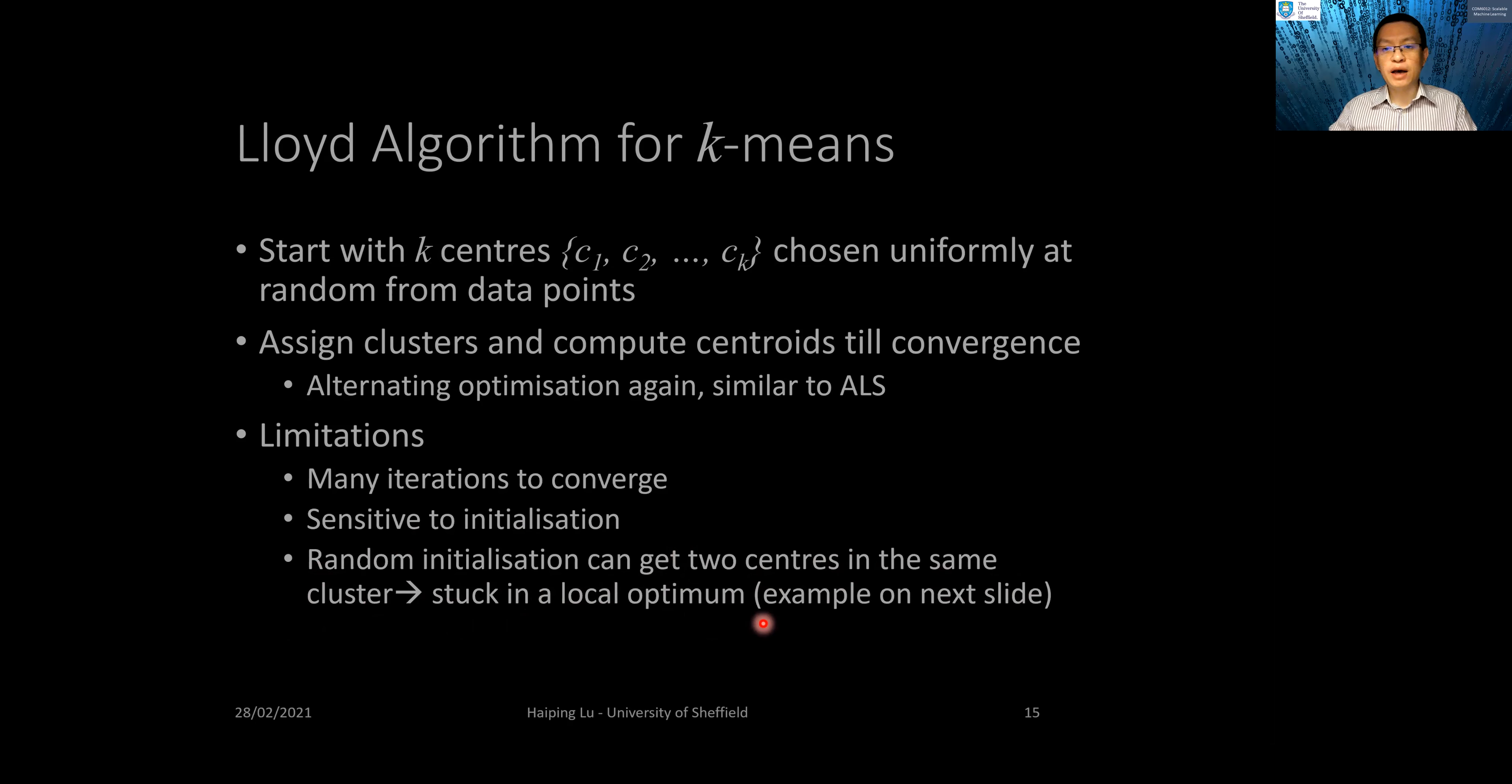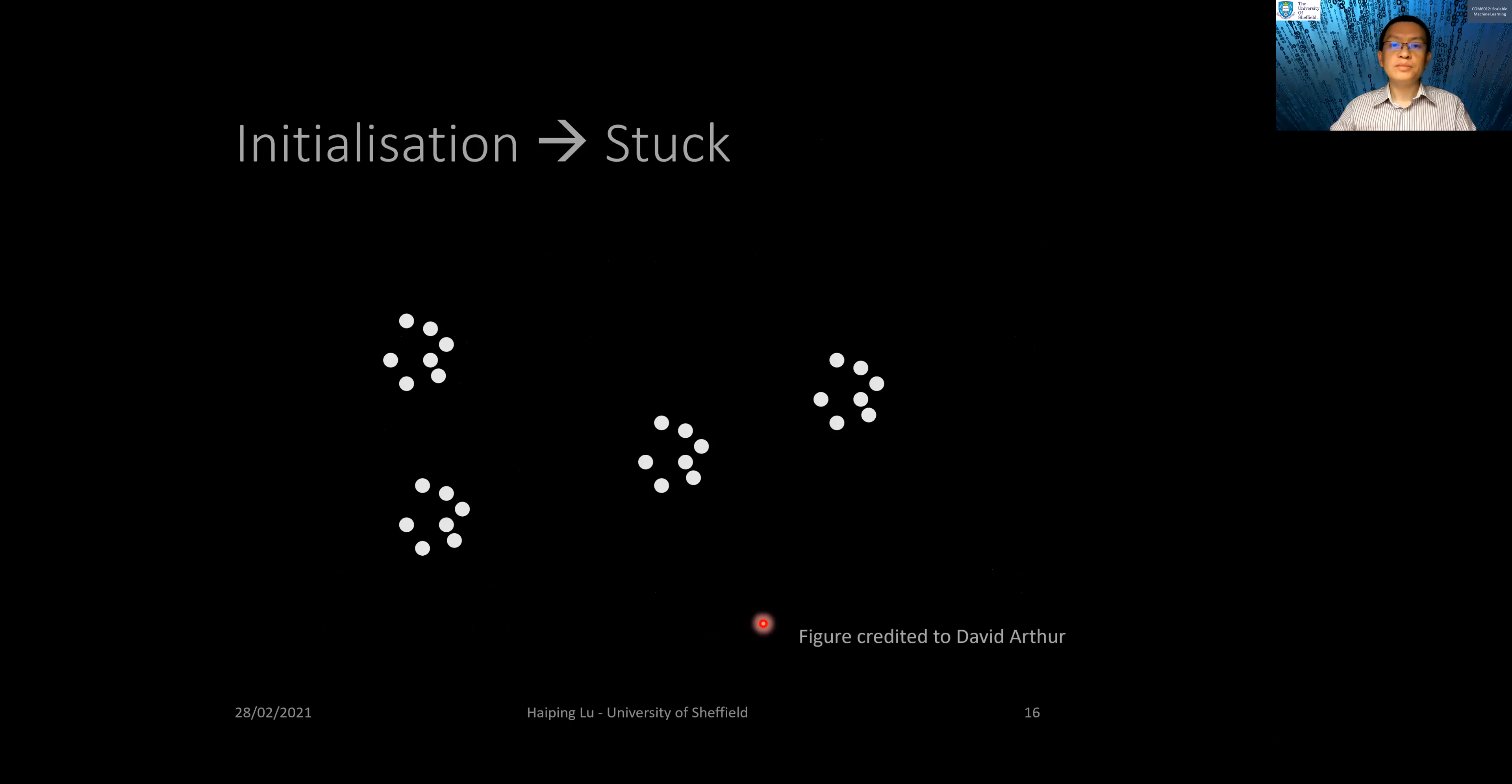Let's see an example. Suppose we have a bunch of data points and want to find four clusters. Obviously, we have well-separated four clusters, so it should be an easy job. Let's run Lloyd's algorithm by randomly picking four points.